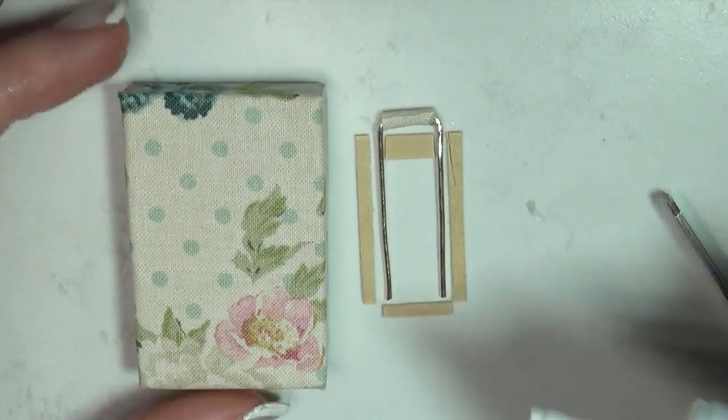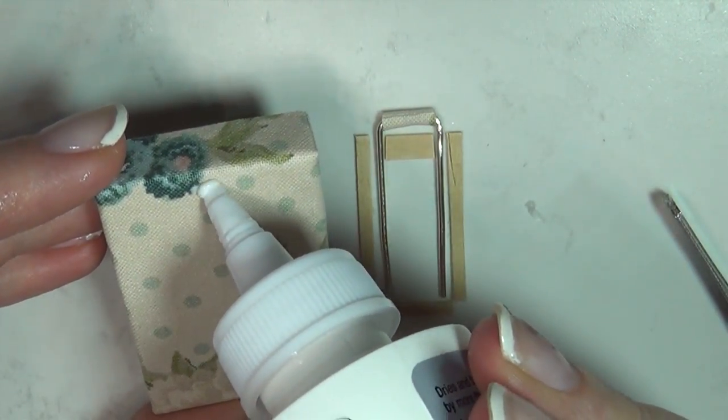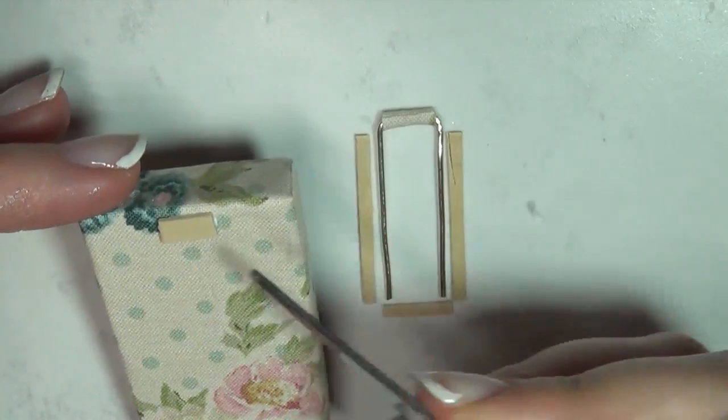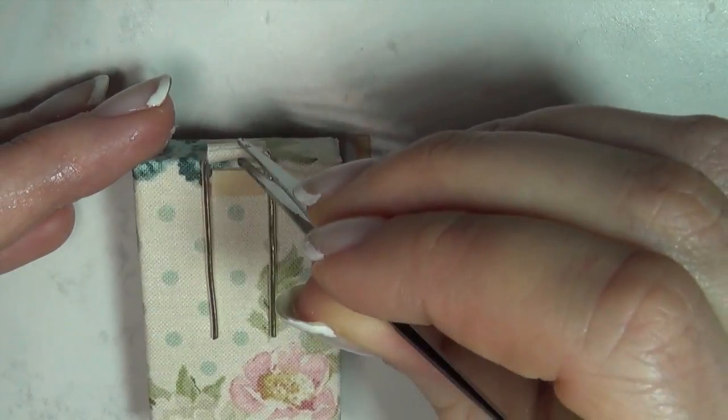To attach it to the back of the suitcase you are going to need to cut out some stirring sticks in this kind of frame like pattern. Glue them to the back and then glue a piece of fabric on top of it to keep it all in place.